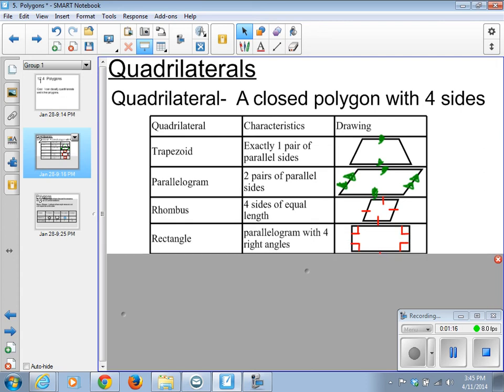Next, a rectangle. This is a parallelogram with four right angles. It's a parallelogram because we've got two pairs of parallel sides. The opposite sides are parallel.